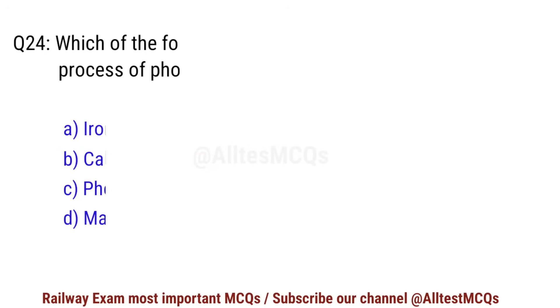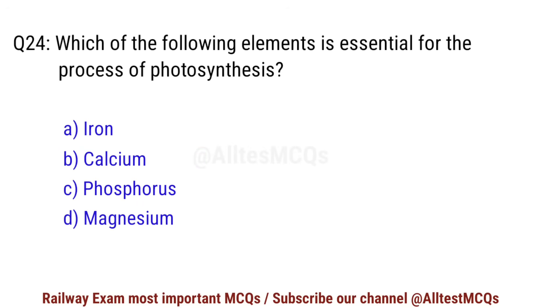Q24. Which of the following elements is essential for the process of photosynthesis? Right option is D. Magnesium.